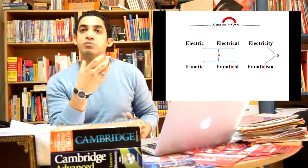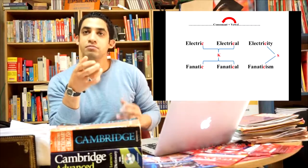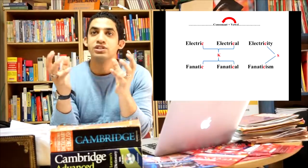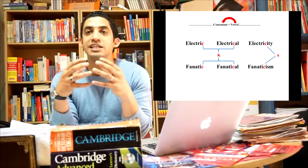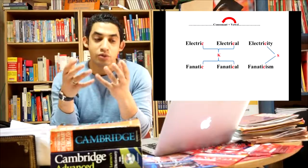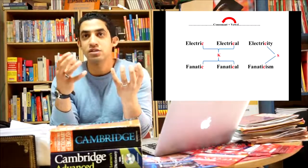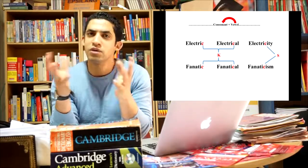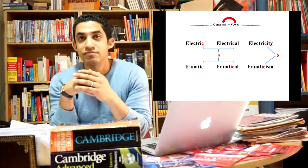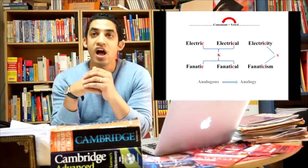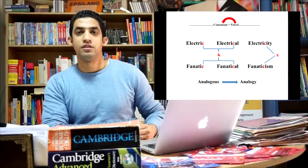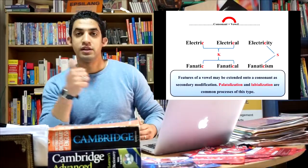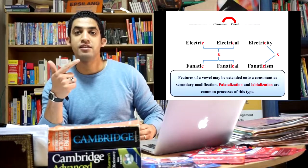They will juxtapose. K juxtaposes with the vowel. So what happens? The K assimilates the vowel features and changes to an S sound. The same case for fanatic, fanaticism. And the same case for analogous, analogy. Common processes of this type of assimilation, we can mention two: labialization and palatalization.